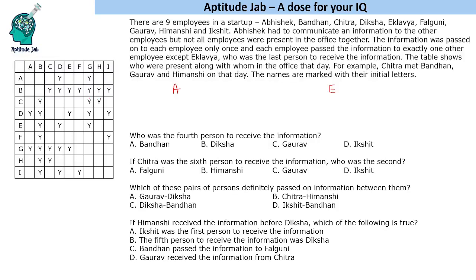Now, how to crack this problem: A is present, so either A will pass on the information to D or G, because A is connected to only these two people. We will take cases like this. For Bandhan, we cannot determine who he passed the information to because Bandhan is connected to too many people. But for A, we can say either A→D or A→G. So let us make two cases: Case 1 is A→D, and Case 2 is A→G, because A can transfer to either D or G.